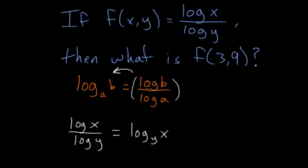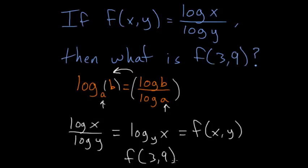Notice that the logarithm in the denominator is the base, and the logarithm in the numerator is what is inside here. And this is equal to f of x comma y, and we want to know what is f of 3 comma 9.